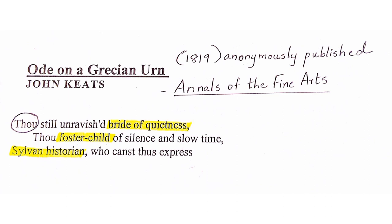According to Keats, time usually destroys everything — youth, childhood — it all passes away with time. But in the case of this urn, time is preserving it without destroying it. That is why the poet calls the urn 'foster child of silence and slow time.' It is called a foster child because silence and slow time did not make this urn — it was made by an artist, a sculptor — but it is being preserved and taken care of by these two.